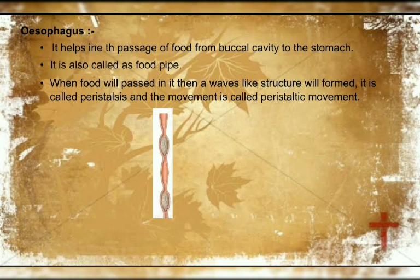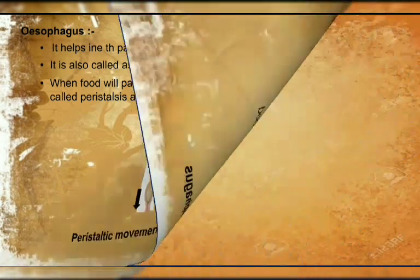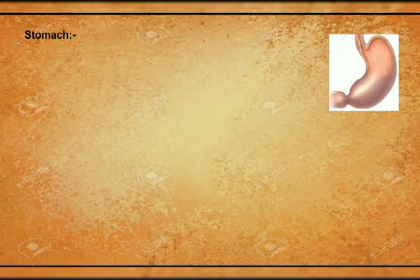Peristaltic movement or peristalsis: this is the oesophagus, this is the food particle, and here is the movement of the food particle that is called peristaltic movement in the oesophagus. Now the diagram of the stomach — the stomach is J-shaped.